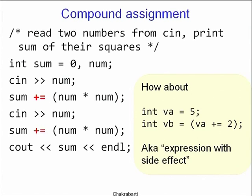Consider the effect of expressions with side effects. If you say 'int va = 5' and then 'int vb = va += 2', this is called an expression with a side effect. We are computing 'va += 2', which is an assignment, and the assignment itself has a value.